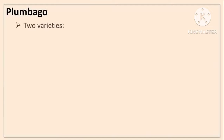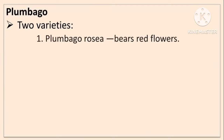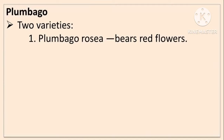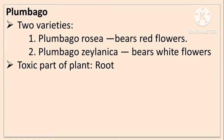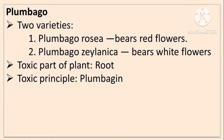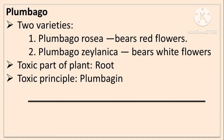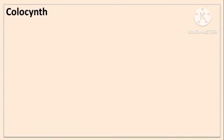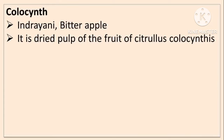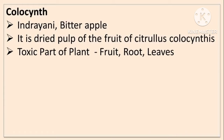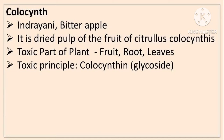Plumbago has two varieties: Plumbago rosea bearing red flowers, and Plumbago zeylanica having white flowers. The toxic part is root and toxic principle is plumbagin. Colosynth, also called Indrayani or bitter apple, is the dried pulp of fruit of Citrullus colocynthis. Toxic parts are fruit, root, and leaves. The toxic principle is colocynthin, a glycoside.